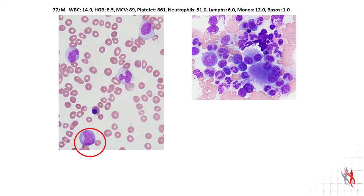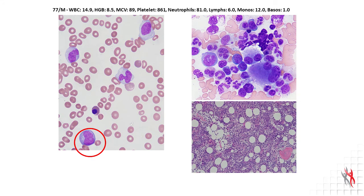This patient eventually had a bone marrow evaluation that showed dysplasia in all three lineages: the megakaryocytic lineage, the granulocytic lineage, as well as the erythroid lineage. This is an image from the patient's bone marrow core biopsy, which was decalcified and examined under the microscope. You can see here that the bone marrow is very hypercellular, with a cellularity of about 90%, which in a patient who is 77 years old, is in excess of what one would normally typically see.